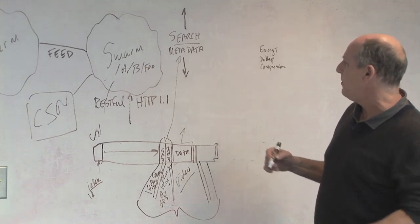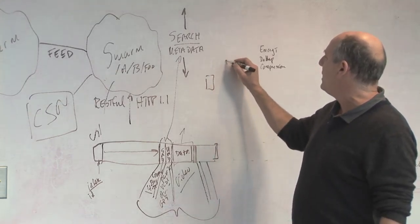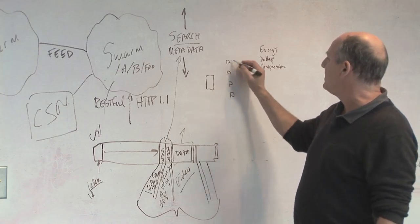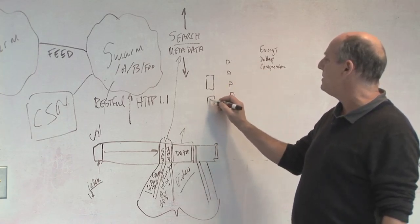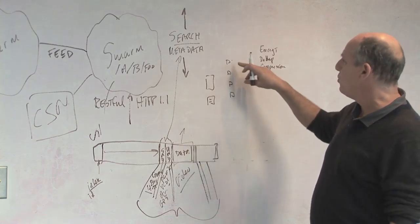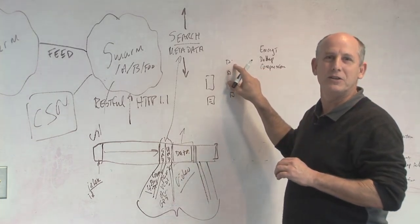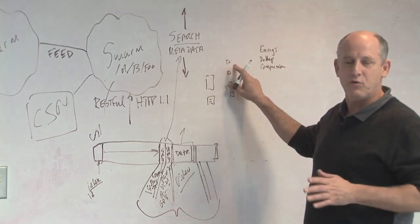So in dedupe, it'll take a file and it'll break it up into all these little parts and then it'll describe the file by saying how many of each one of these it has in some description. Well, if you lose one of these, you lose lots of files potentially. And so dedupe is actually a great way to lose your data.